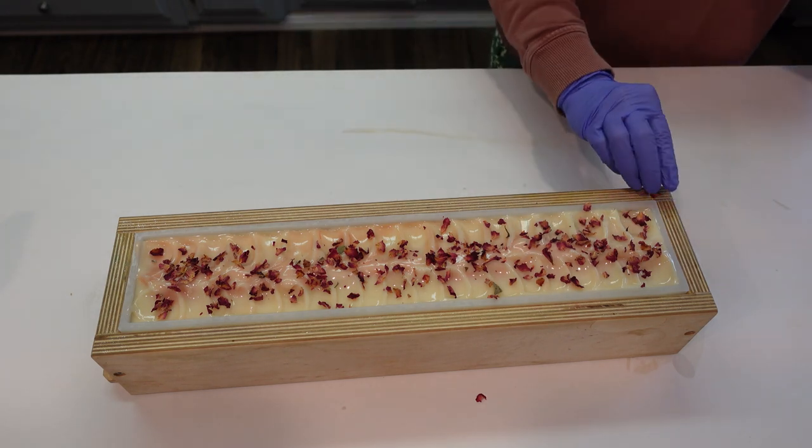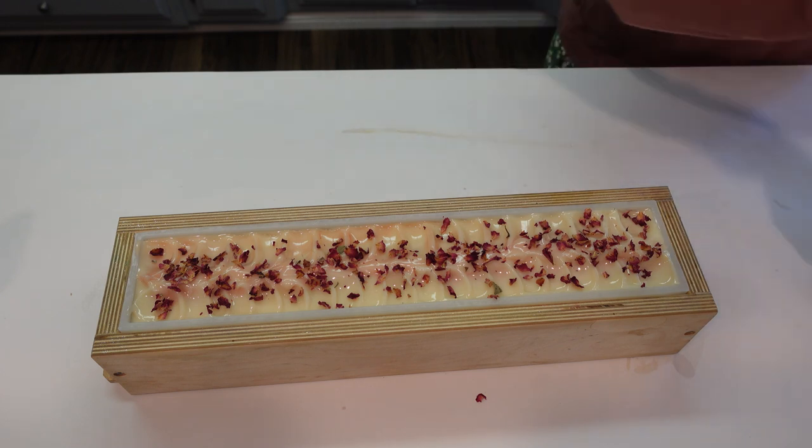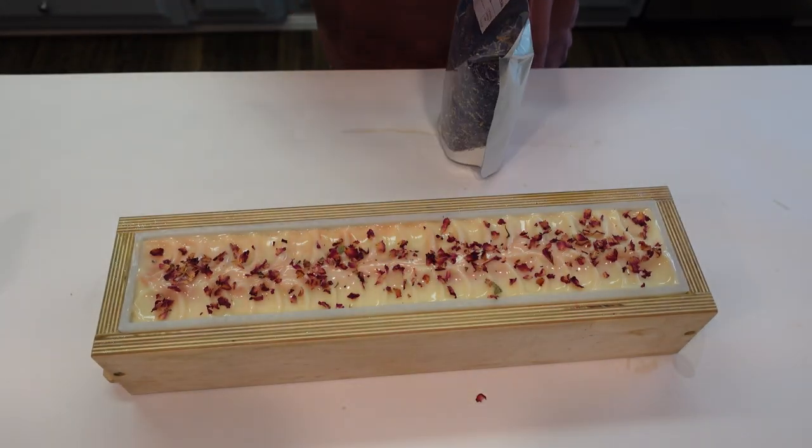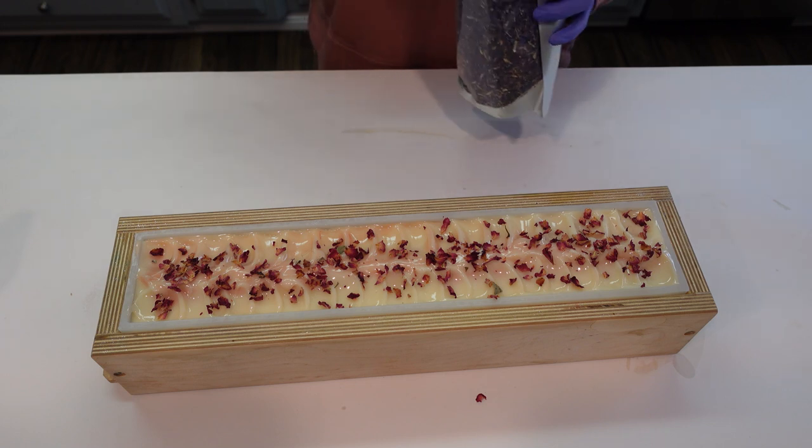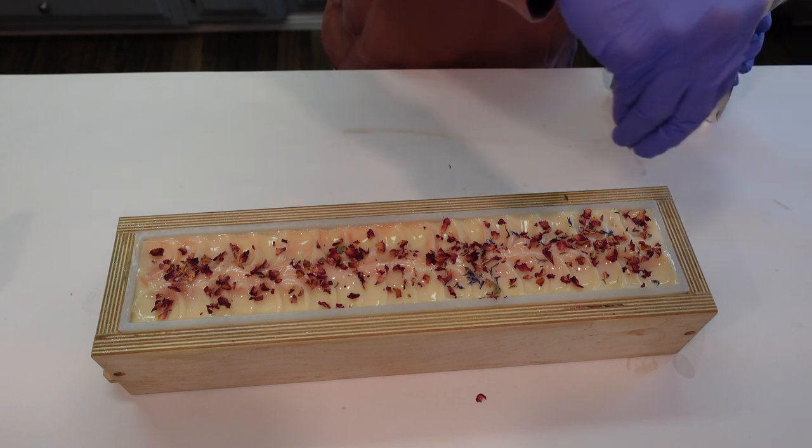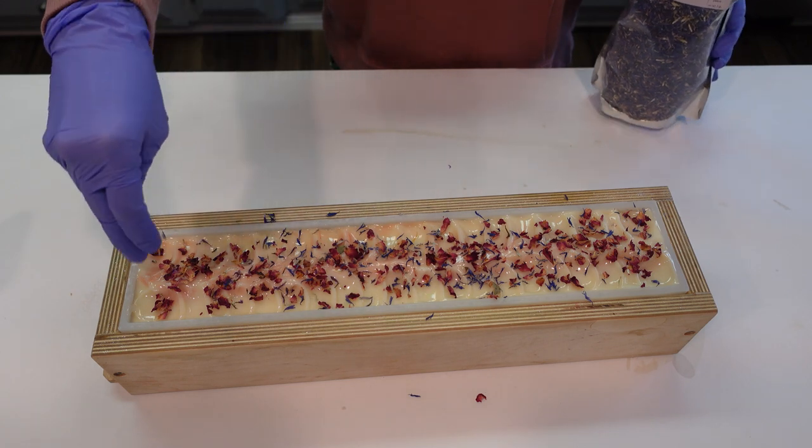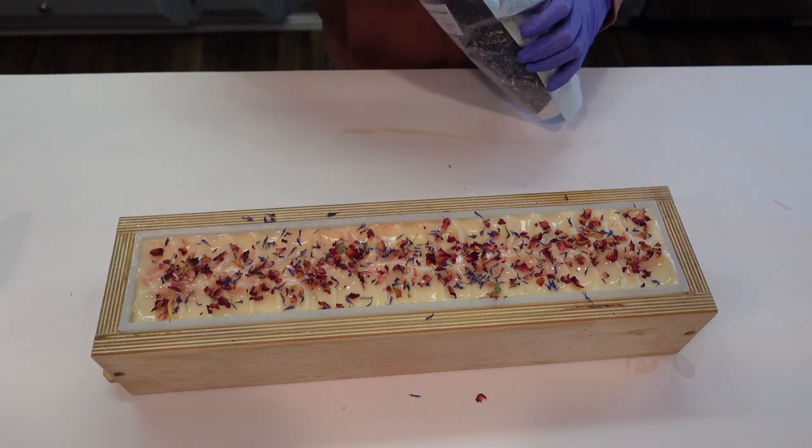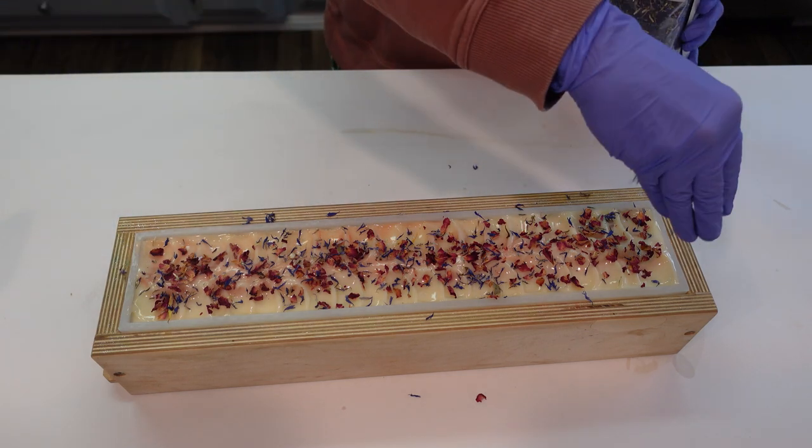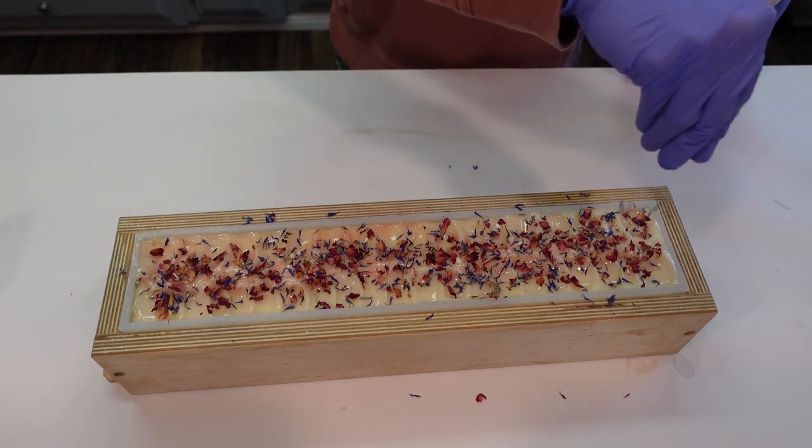And then I'm also going to go ahead and place some blue cornflower petals as well, also from Brambleberry. Just think these are so beautiful, just to give it a little bit of an accent. I think that looks so gorgeous—such a beautiful springtime looking soap. And I've always thought goat milk soaps look really nice with flowers.